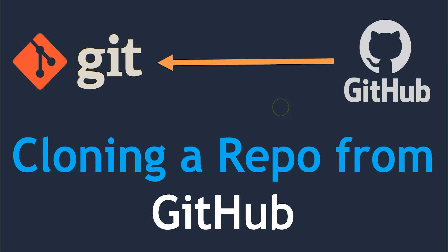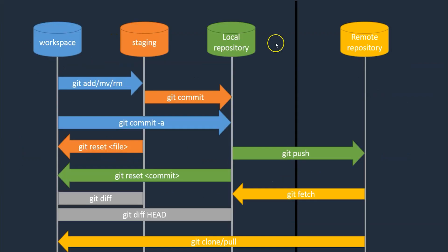Hey guys, welcome back. In the previous lecture we saw how to create a repository. In this lecture we are going to clone that repository onto our local system. Before that, let's understand how the local and remote repository works. We have the git add command, which adds files from the working area to the staging area, and git commit, which moves changes from the staging area to the local repository.